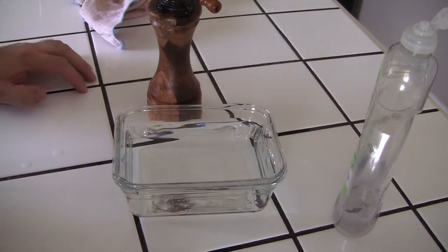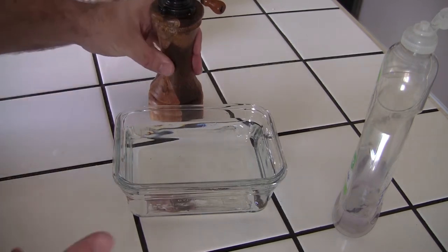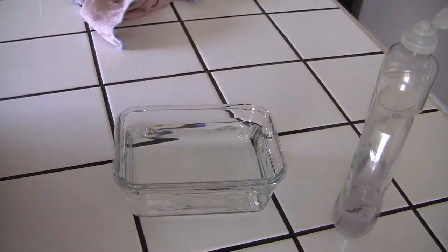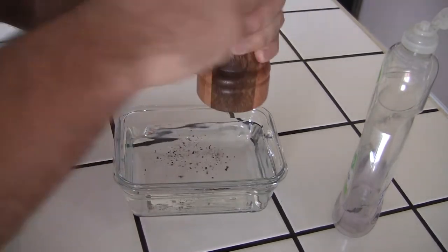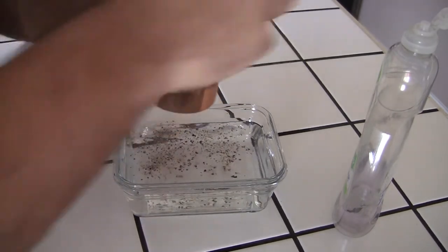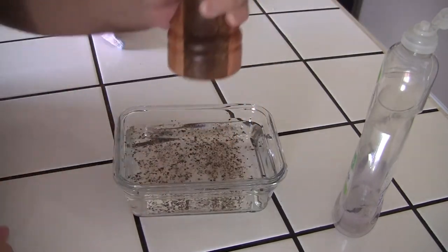Okay, the first cool experiment that you can do is to explain how germs like to stick on your hands and how you can get rid of it. So, what you need is a bowl of fresh water, pepper, and soap. What you do is you're going to grab the pepper, you're going to spread some pepper in the bowl. You're going to have a fresh layer of pepper.